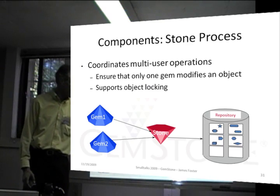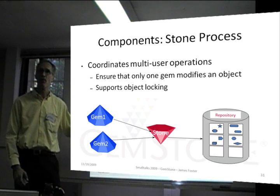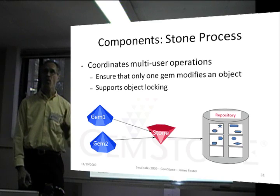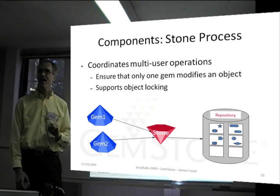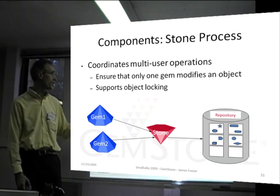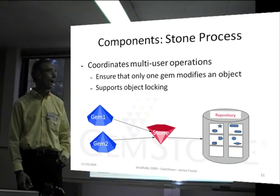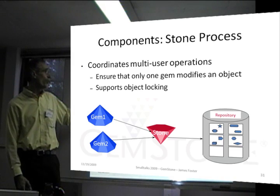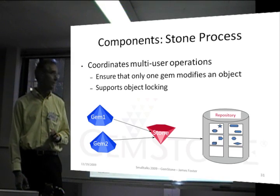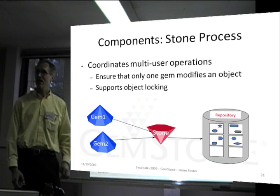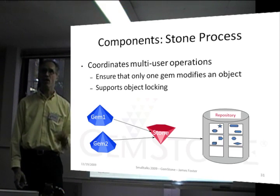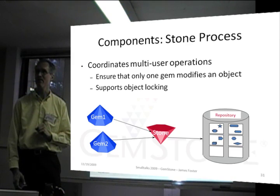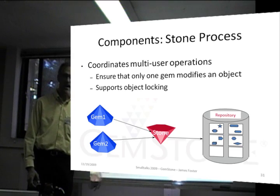In addition to the gems, we have a stone process. We'll be looking at quite a bit more detail for each of these. The stone process is only one per database, and it manages multi-user operations that need to be coordinated — so only one gem is modifying an object at a time. Object locking: only one process, only one session, should be able to lock an object at a time. That object locking is handled by the stone.